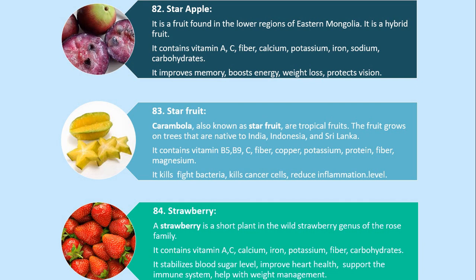Number 83. Star Fruit. Carambola, also known as star fruit, are tropical fruits. The fruit grows on trees that are native to India, Indonesia, and Sri Lanka. It contains vitamin B5, B9, C, fiber, copper, potassium, protein and magnesium. It fights bacteria, kills cancer cells, and reduces inflammation.